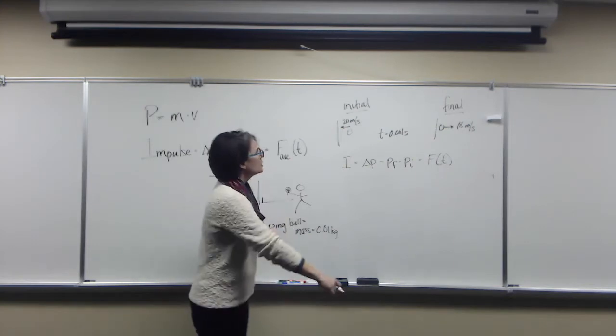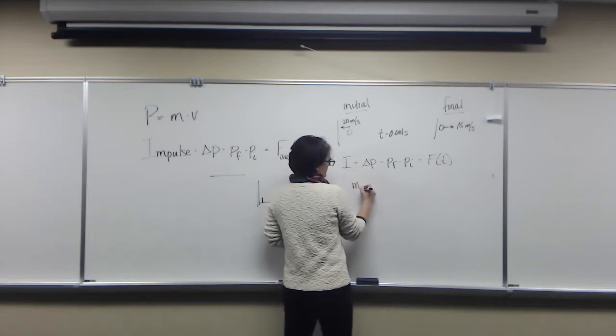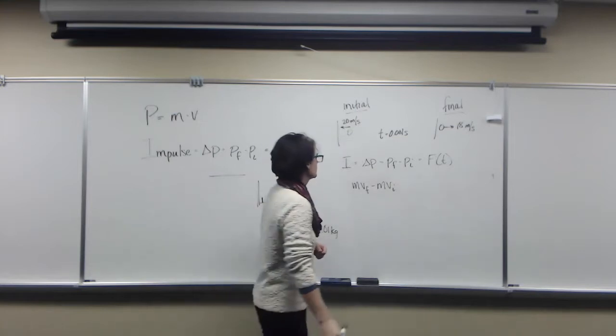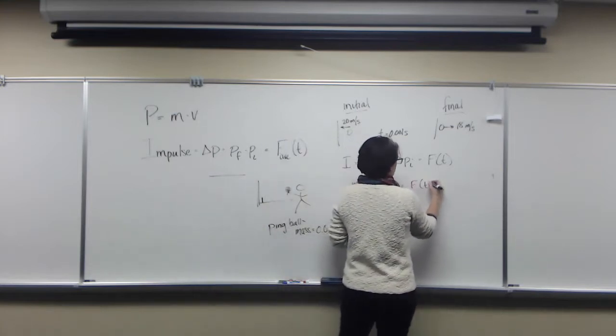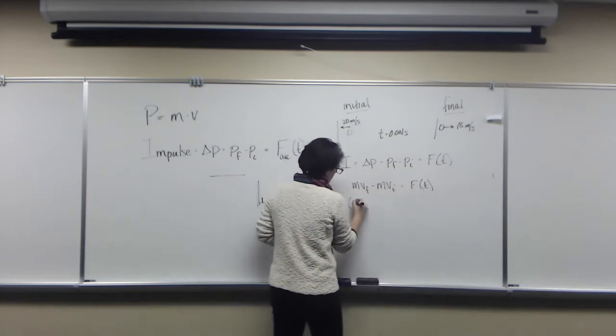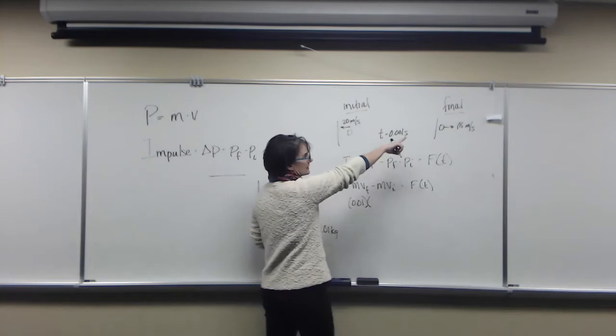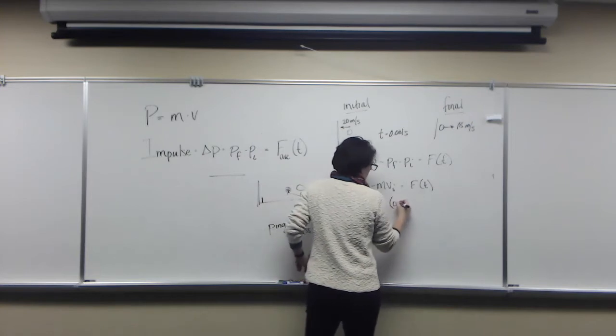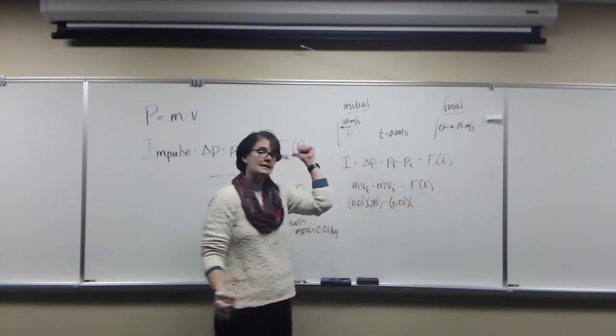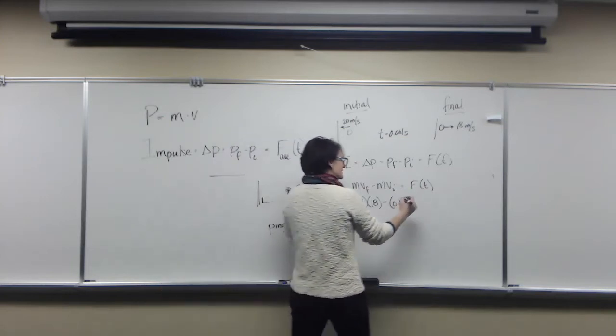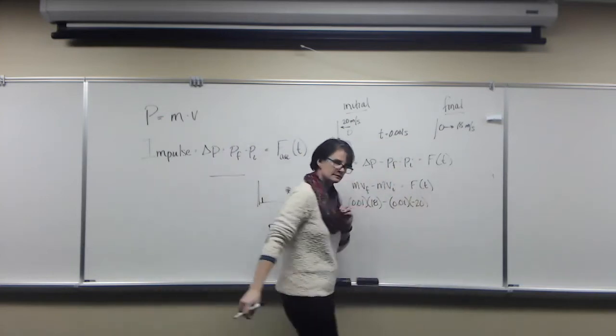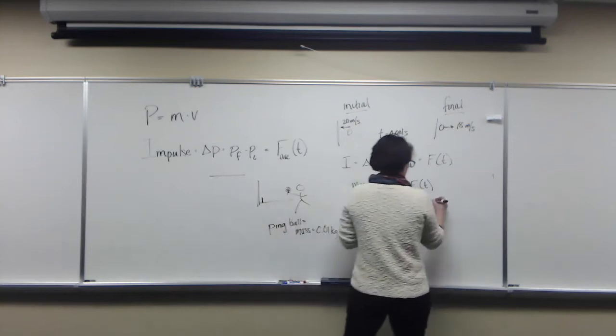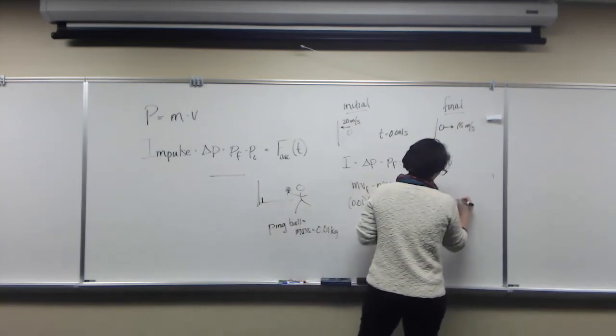Mass times final velocity minus mass times initial velocity. We know the mass isn't going to change, so it equals our force times our time. Our mass is 0.01. Our final velocity, as I've drawn it, is to the right, so that's positive, that's 18. Our initial velocity is to the left, so this is negative 20. That will equal our force times 0.001. Have to pay attention to direction.